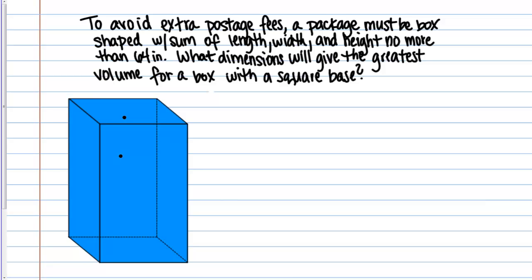Let's work through the following optimization problem together. To avoid extra postage fees, a package must be box-shaped with a sum of length, width, and height no more than 64 inches. What dimensions will give the greatest volume for a box with a square base?